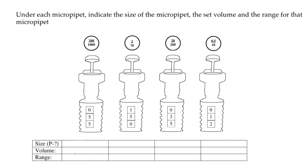Hello and welcome to Nikolai's genetics lessons. Today's question is: under each micropipette, indicate the size of the micropipette, the set volume, and the range for that micropipette.